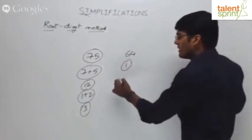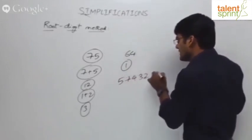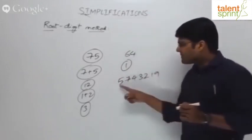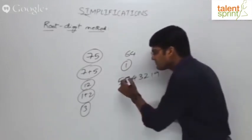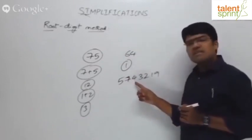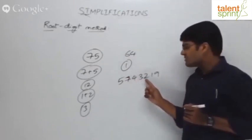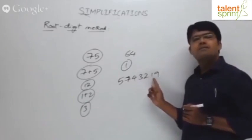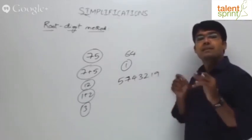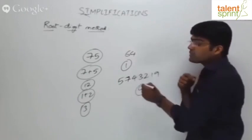If I give you the number 5, 7, 4, 3, 2, 1, 9 — what is the root-digit? 5 plus 7 is 12, plus 4 is 16, plus 3 is 19, plus 2 is 21, plus 1 is 22, plus 8 is 31. Then 3 plus 1 is 4. The root-digit here is 4.